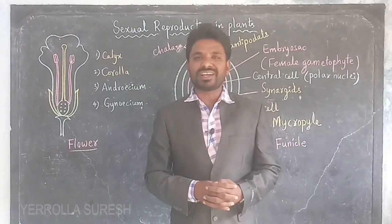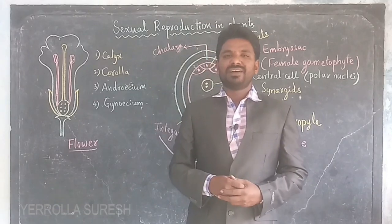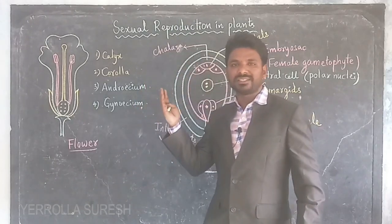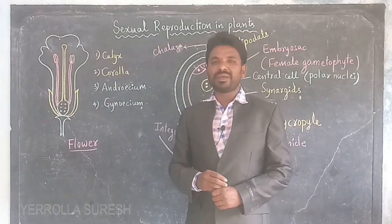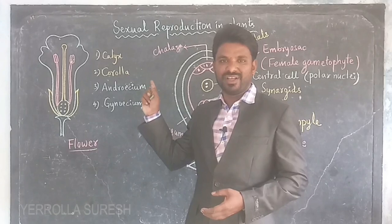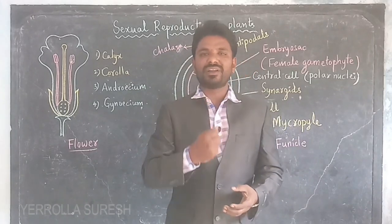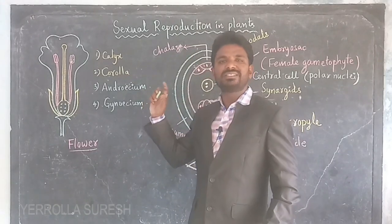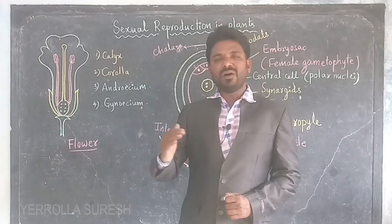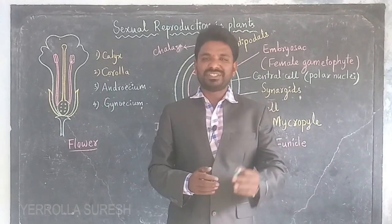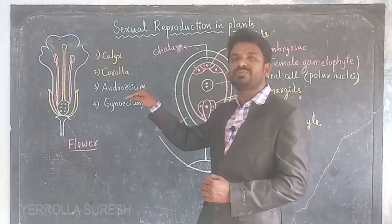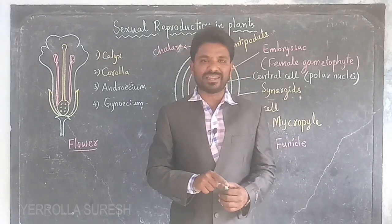In plants, sexual reproduction occurs in a specific part. In animals, male and female reproductive systems are present. Similarly, plants also have male and female reproductive systems. The answer to where this occurs is the flower. The flower is the site for sexual reproduction and is also called the sexual part of a plant. All remaining parts of the plant body are vegetative parts.